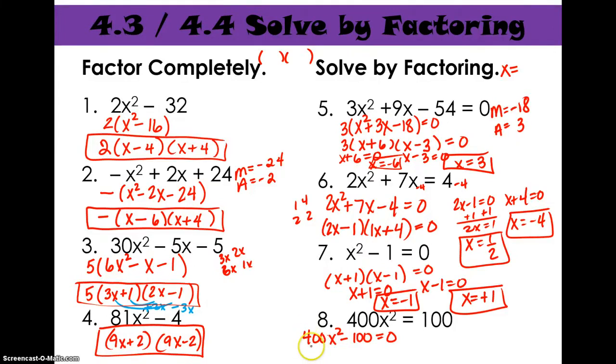Okay, so if we were going to factor out 100, we would have 100 times 4x squared minus one equals zero. And that would be DOTS right there. And that would split into 2x and one. So we'll have 100 times 2x minus one, 2x plus one equals zero. Set each of those equal to zero. And you get x equals one half and x equals negative one half.